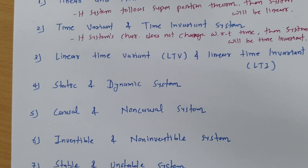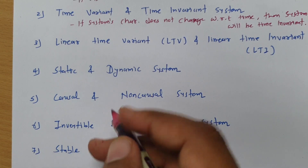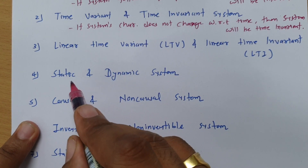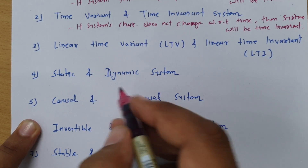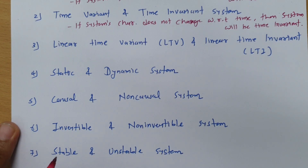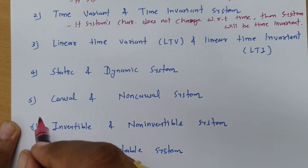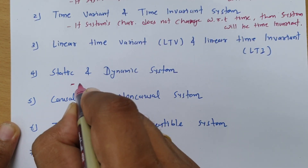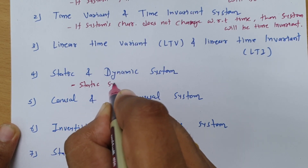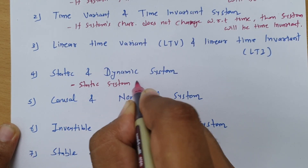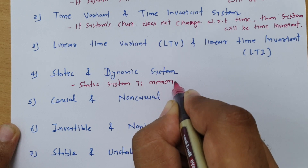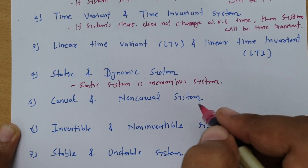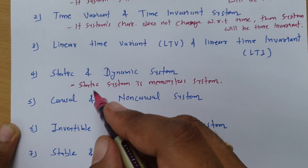The fourth classification is static and dynamic systems. Static means it is a memory-less system. If a system requires some memory to store data, then it will be a dynamic system. We will see some examples as well as detailed understanding in the next few sessions.